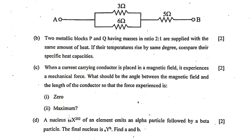Question 4c: When a current-carrying conductor is placed in a magnetic field, what angle between the field and conductor gives zero force? They should be parallel, i.e., 0 degrees. For maximum force, the angle should be 90 degrees — when the magnetic field and the length of the conductor are perpendicular to each other.